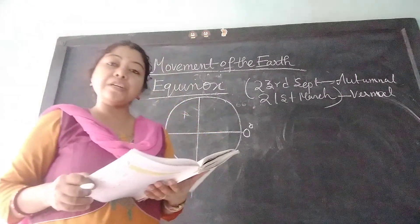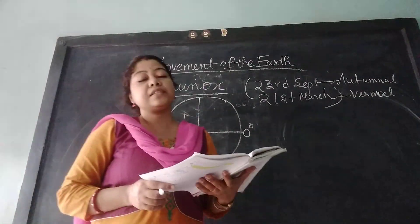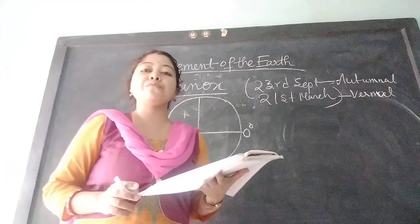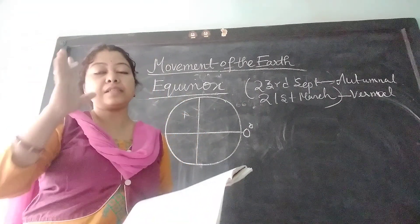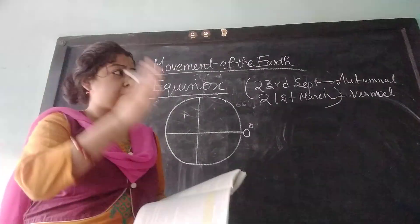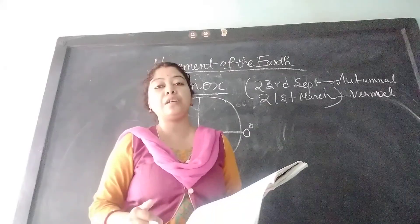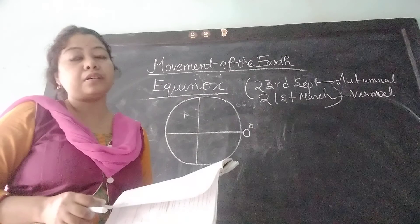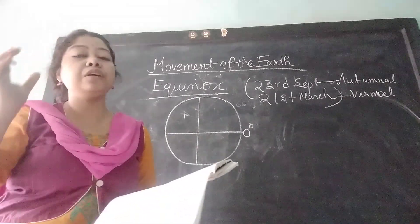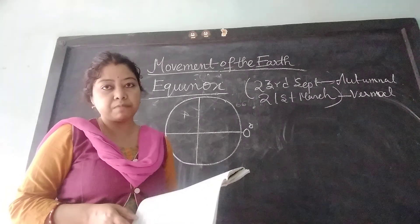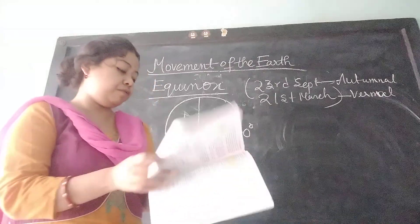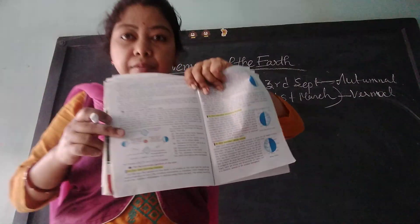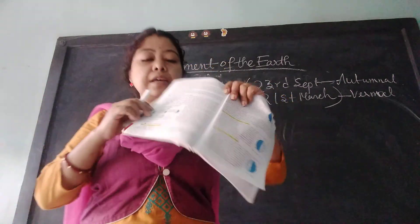You should read this portion once — summer solstice, winter solstice, autumnal equinox, and vernal equinox are all given together in one paragraph. If you get a question on this portion, you have to draw this diagram.